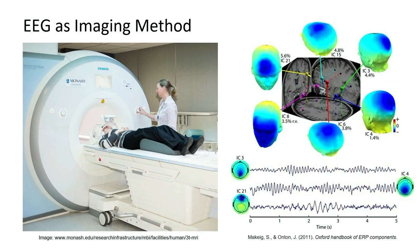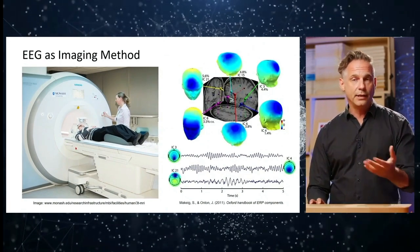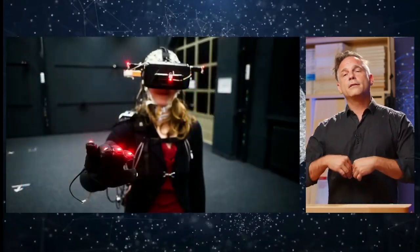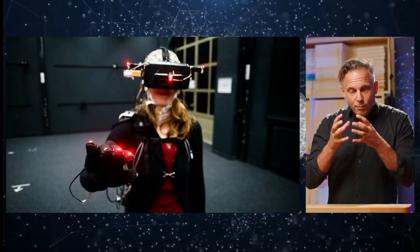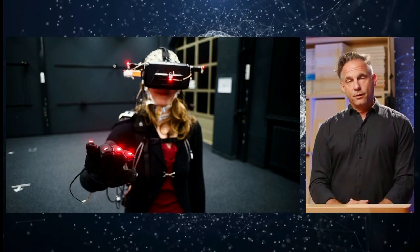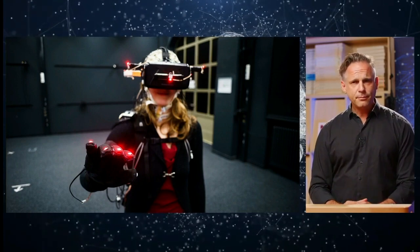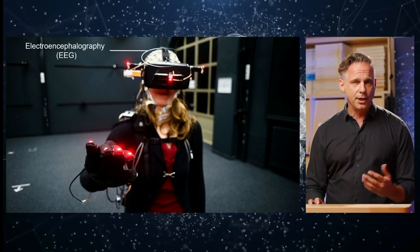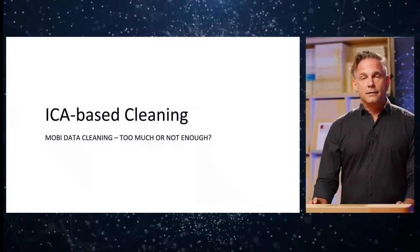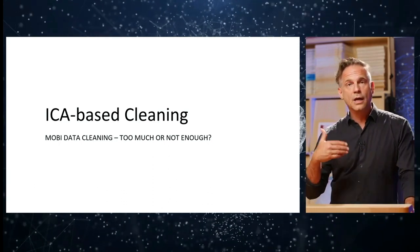Taking brain imaging methods like ICA, which allow dissociation of brain and non-brain origins in the EEG signal, you can utilize the mobility and portability of lightweight small EEG amplifiers. This is a setup for mobile brain-body imaging that we use in the Berlin Mobile Brain-Body Imaging Lab. You can use any kind of mobile brain imaging device — and this is where we focus today, looking into ICA-based cleaning.